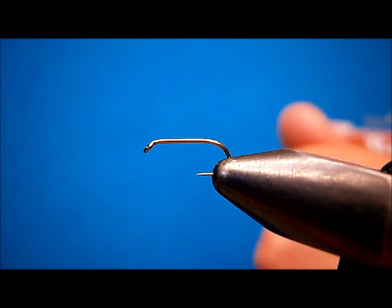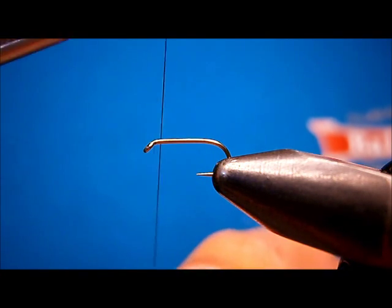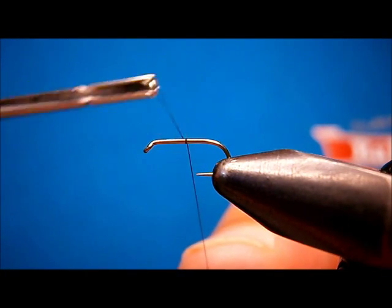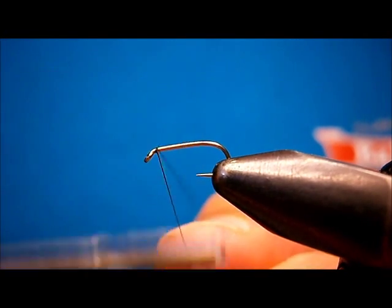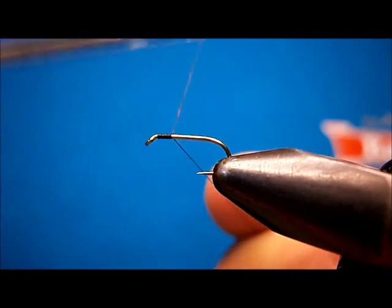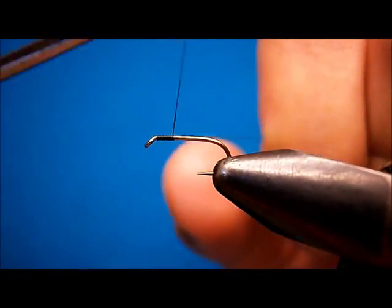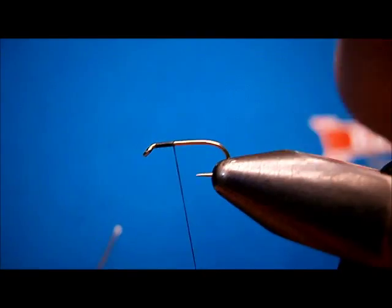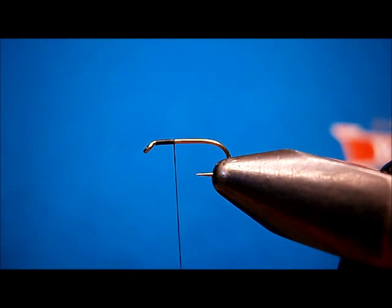So let's get started. It's the jam knot that I showed you in the last video. Start your thread off, wrap it back. Bring it about 2 hook eyes back. You can break your tag end off or snip it off.